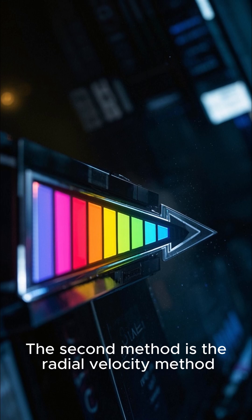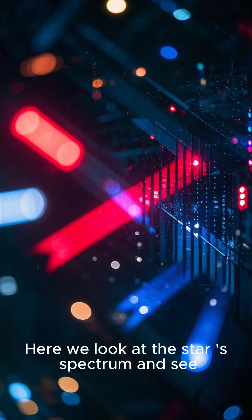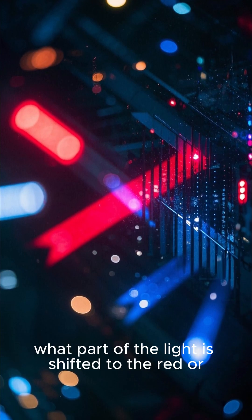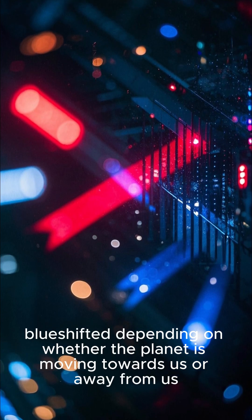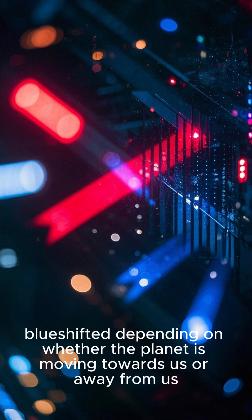The second method is the radial velocity method. Here we look at the star's spectrum and see what part of the light is redshifted or blueshifted, depending on whether the planet is moving towards us or away from us.